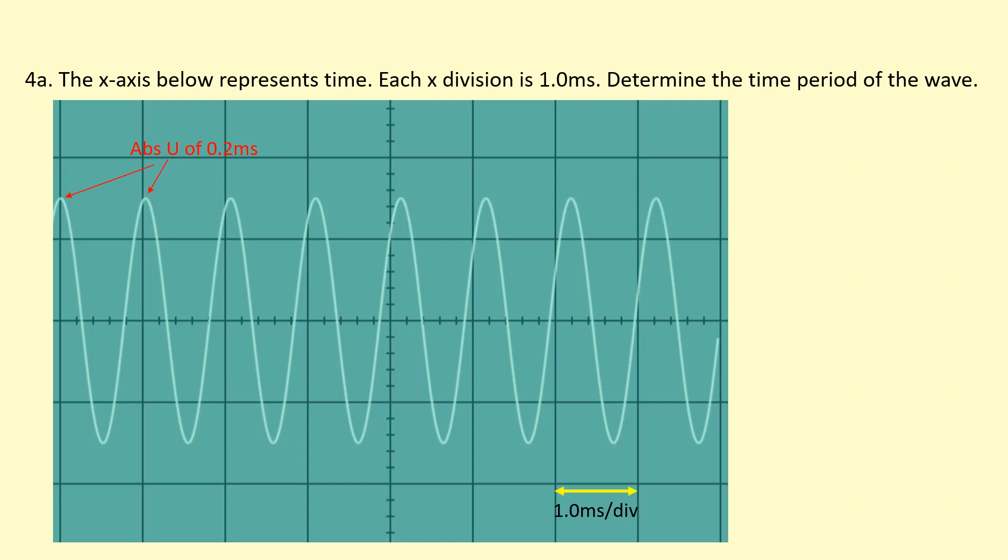So the problem with this is if we just measured from those two, you'd get a really large absolute uncertainty here because you've got errors in both readings at the start and the end.